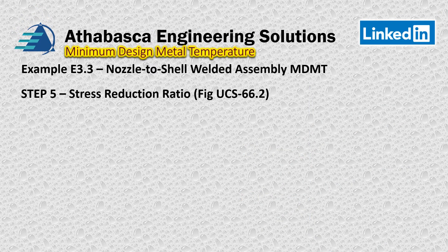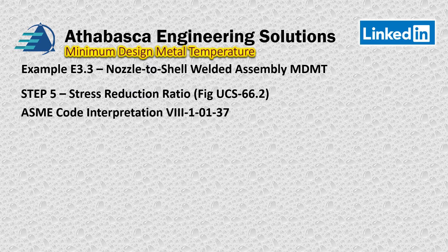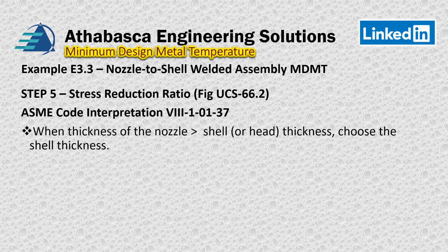Back to an ASME code interpretation, Section 8 dash 10137. It sets the precedent: when the nozzle thickness is greater than that of the shell or head you're working on, then you need to choose the shell thickness — basically where the weld is. That's where it all comes from.